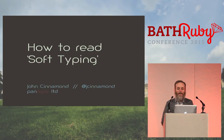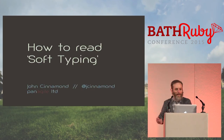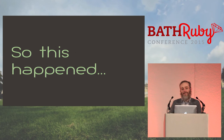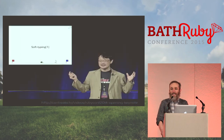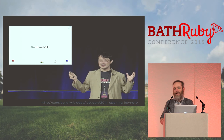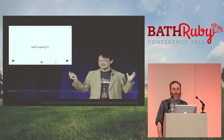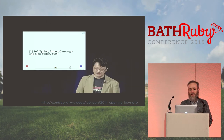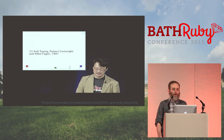Hello everybody. At the end of last year, during RubyConf, during his keynote, Matz talked about adding static typing to Ruby — in particular soft typing — and referenced a couple of papers, including one by Robert Cartwright and Mike Fagan. I'm not going to talk about soft typing today because it's much too hard. I'm going to look at a more basic question: how do you read the paper?